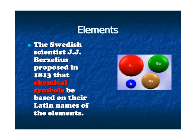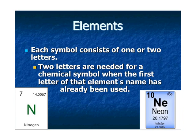The Swedish scientist J.J. Berzelius proposed in 1813 that chemical symbols be based on the Latin names of the elements. That's why when you see gold, it doesn't start with a G, but AU, because its Latin name starts with that. Each symbol consists of one or two letters — like nitrogen has N, and when they got to neon, N was already taken, so it uses the first two letters and neon goes by the chemical symbol NE.